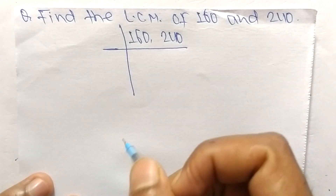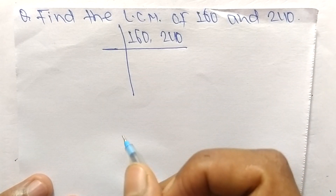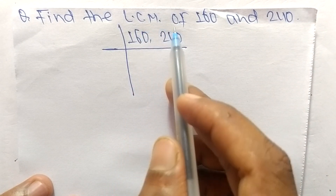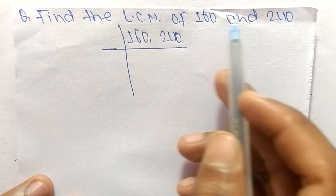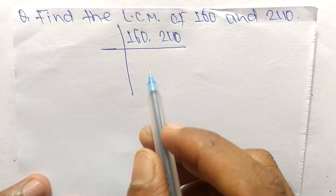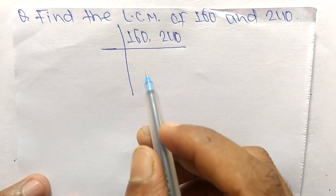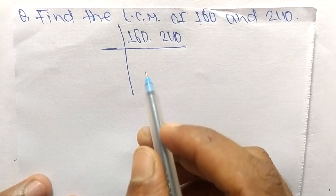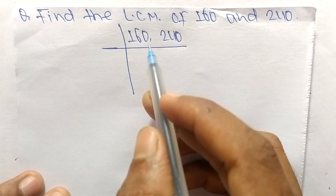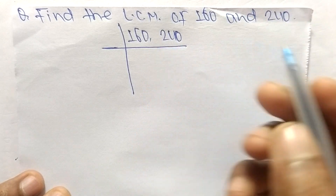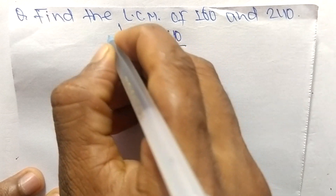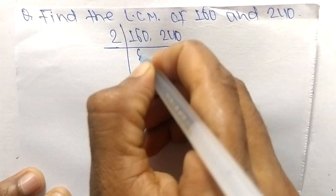Today in this video we shall learn to find the LCM of 160 and 240. To find the LCM, first we choose the lowest number that can exactly divide both 160 and 240, which is 2.